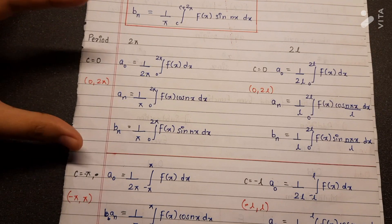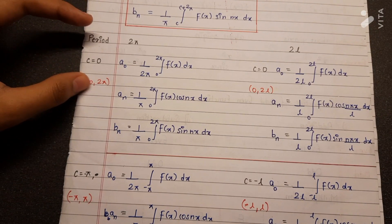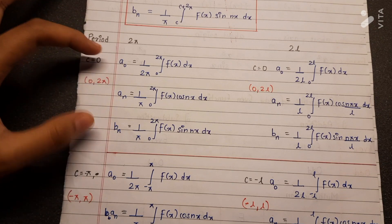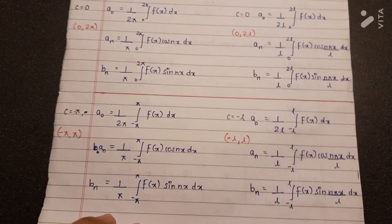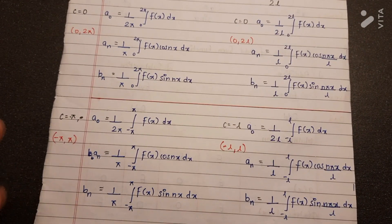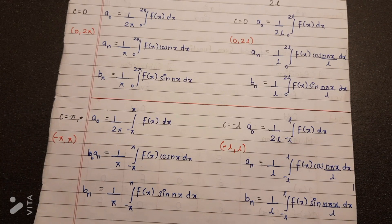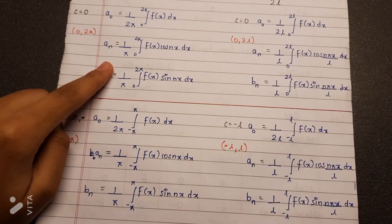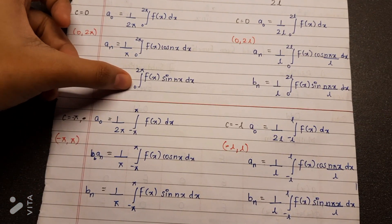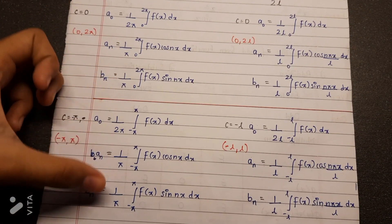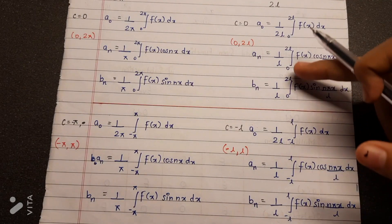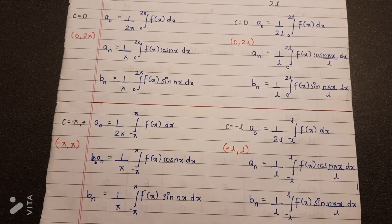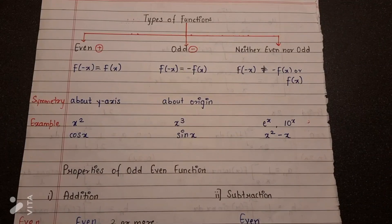When c = π for period 2π, the interval is 0 to 2π. Similarly for period 2l, when c = −π the interval changes: earlier it was 0 to 2π, now it is −π to π; and for 2l, earlier it was 0 to 2l, now it is −l to l.